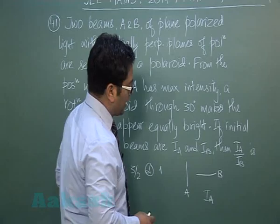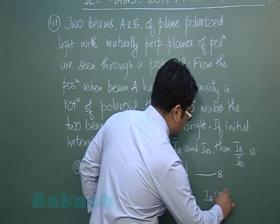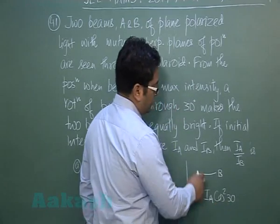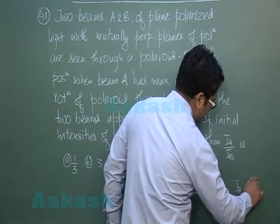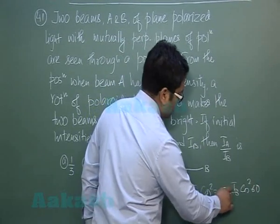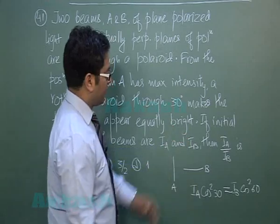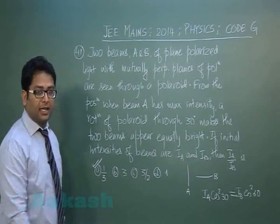Using the law of Malus, the transmitted beam is I_A cos^2(30) and the transmitted beam of B is I_B cos^2(60). The question says these two intensities are equal, so I_A by I_B equals 1 by 3. That's option A.